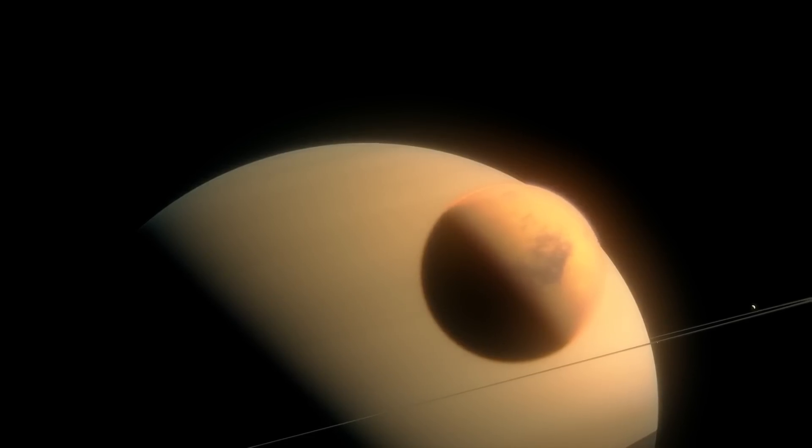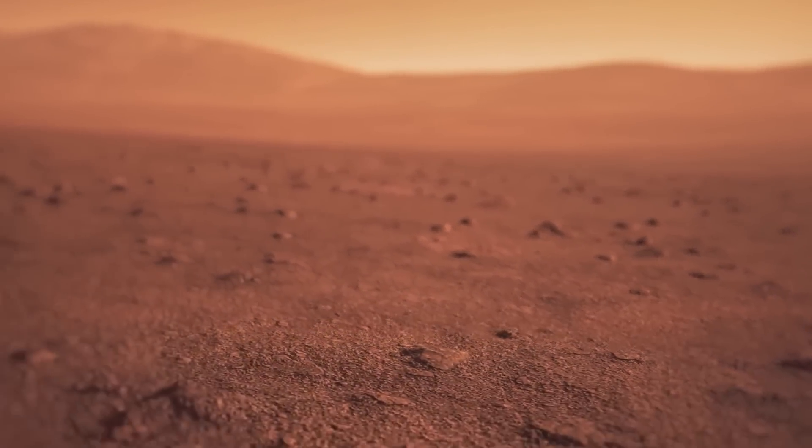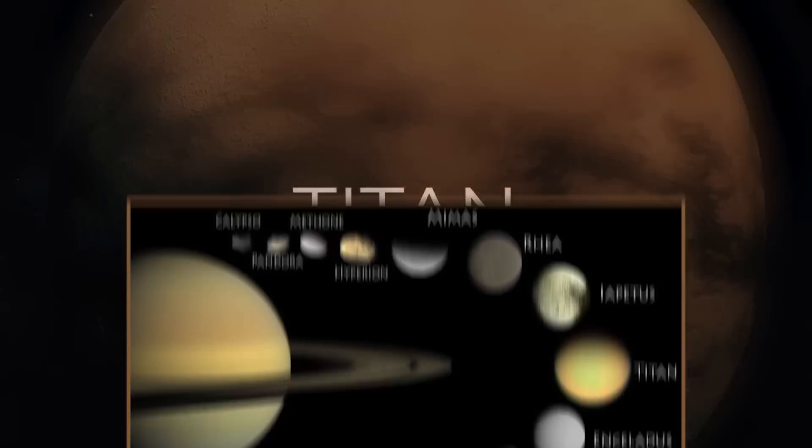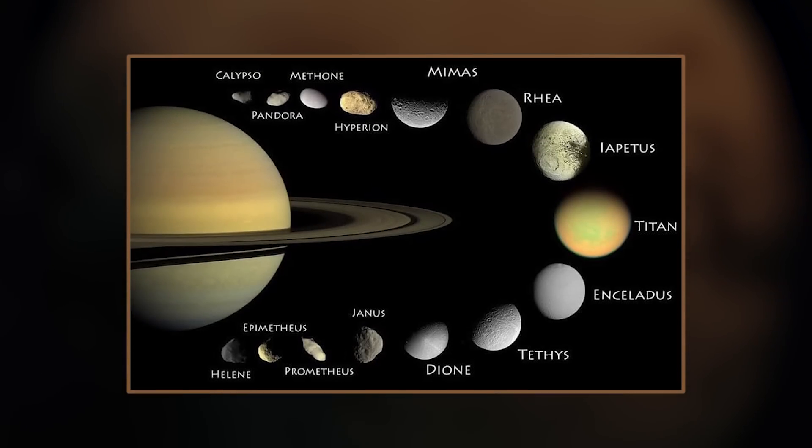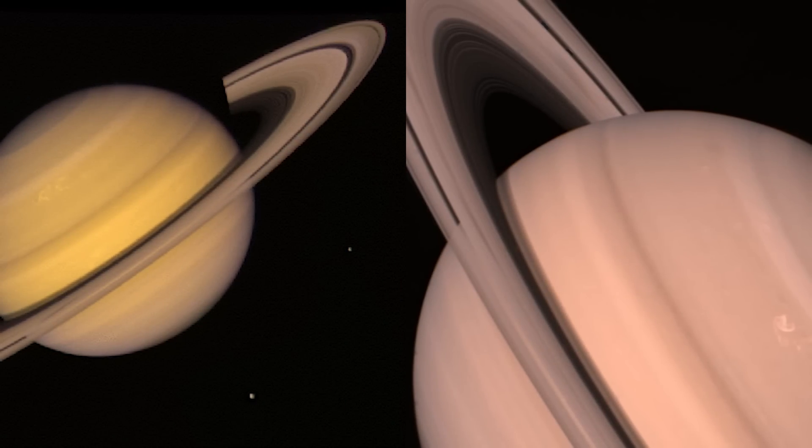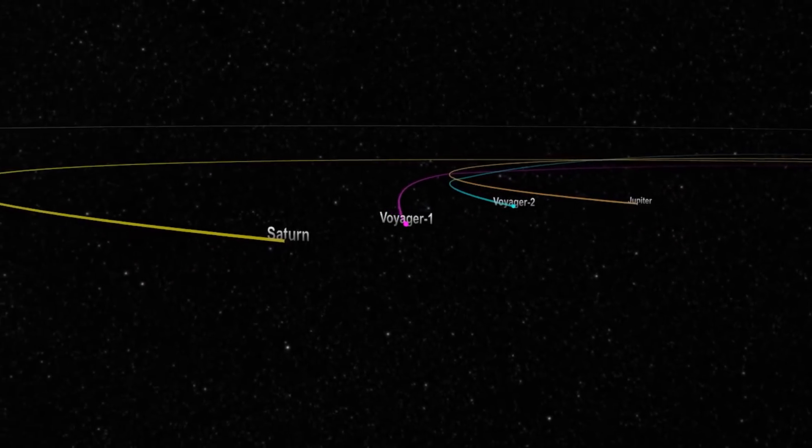While Voyager 2 flew past the giant planet, Voyager 1 gave us a closer look at the nitrogenous atmosphere of the planet moon, Titan, as well as discovered 10 new spectacular moons that orbit the planet. But Saturn was the last planet both probes would observe together as the decision was made to separate both probes.